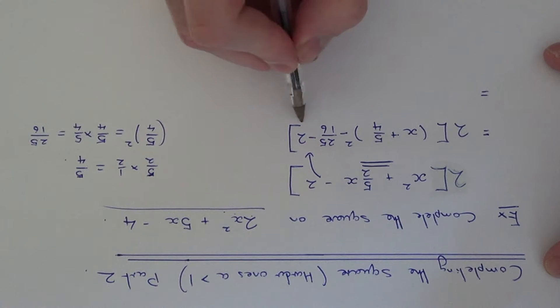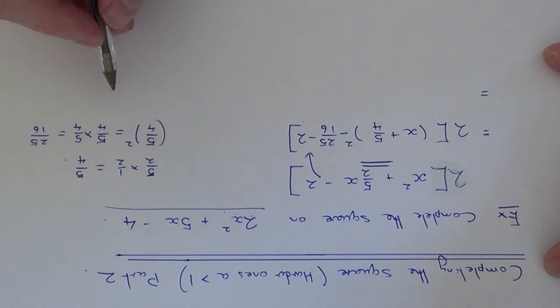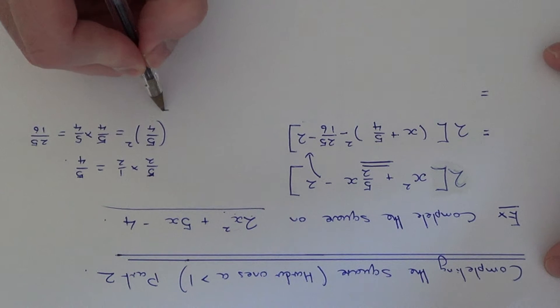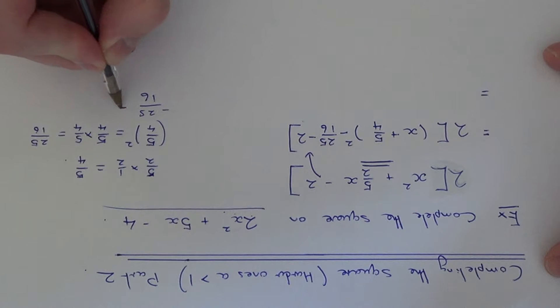So the next thing we need to do is just work out and simplify this little bit here. So you can do this on the side of your page. So we've got minus 25 over 16 minus...